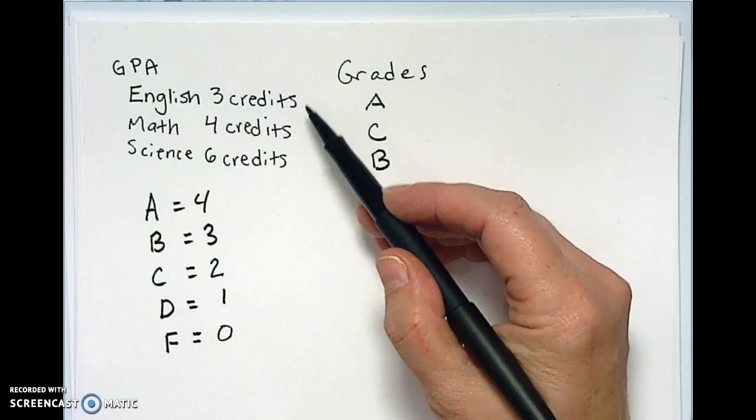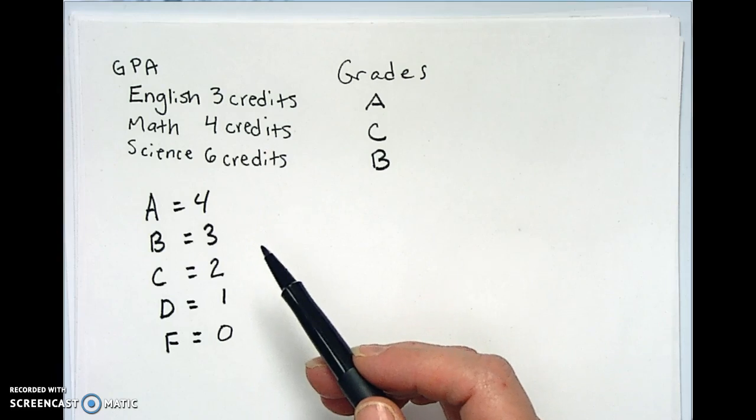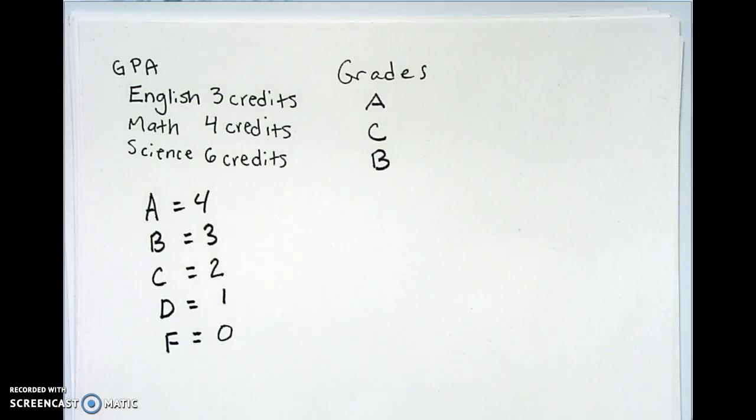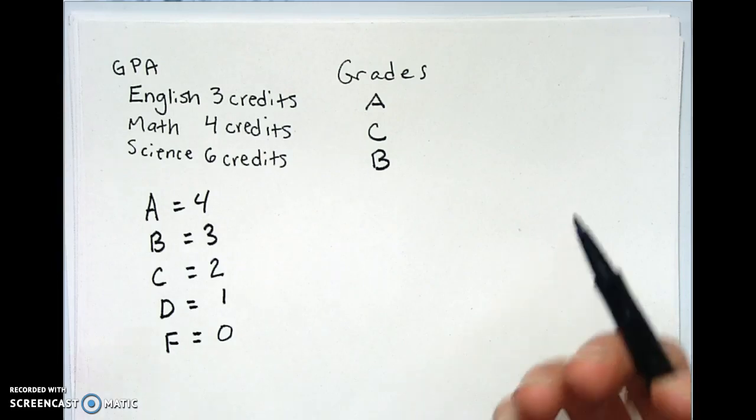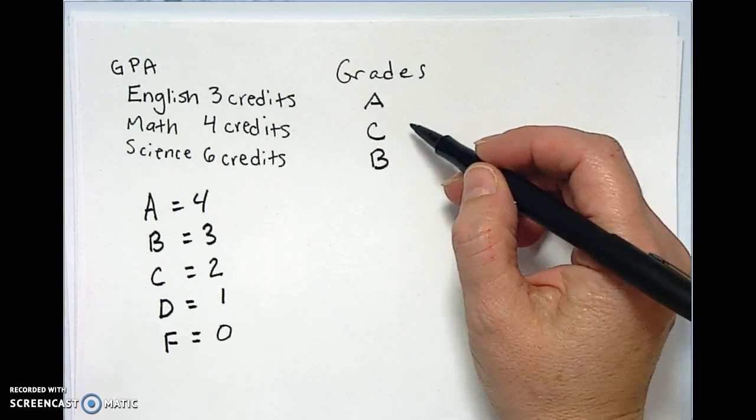Alright, so which one of these classes is going to impact your grade the most? Science. And which one the least? English. Okay, so a six credit class is going to cost more and impact you more, but you got a B in there so we're good. Math C, oh well, whatever.